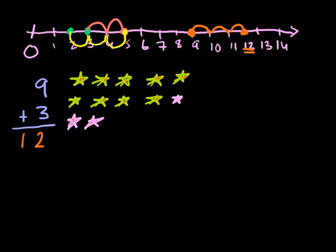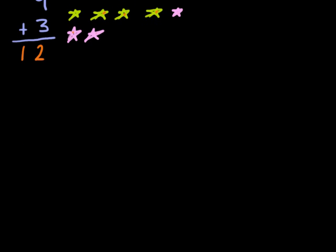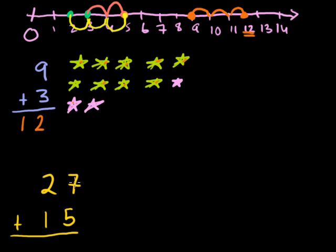For example, if I were to add 27 plus, let's say, plus 15. Now, if you had a lot of time on your hands, you could draw out 27 circles and then draw out another 15 circles and then count the total number of circles you had. Or you could draw a number line that went all the way to whatever 27 plus 15 is. But that would take you forever.